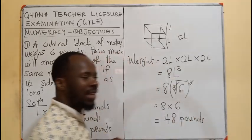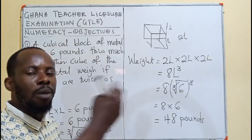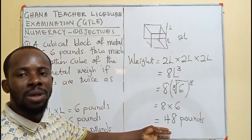It means that the weight of the other metal, which has its length double, is going to give us forty-eight pounds.